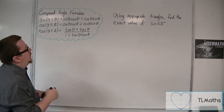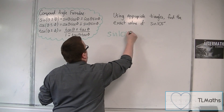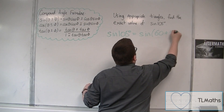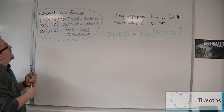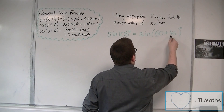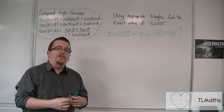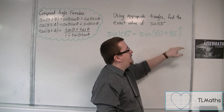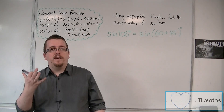One thing that we really need to note is that 105 can be got from adding 60 and 45 together. So what we're doing is effectively finding a theta and phi — this is my theta, and that's my phi. Why have I picked 60 and 45? Well, that is because these are two angles that were part of the two triangles that I told you you needed to learn.